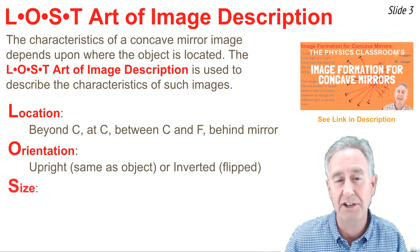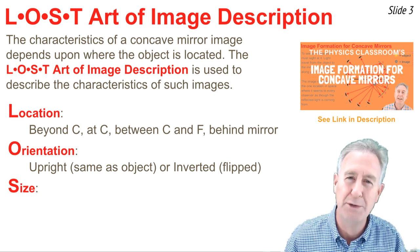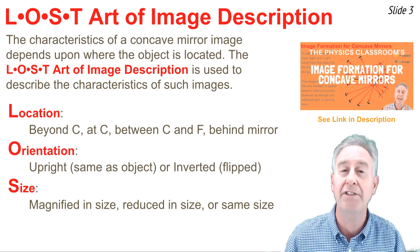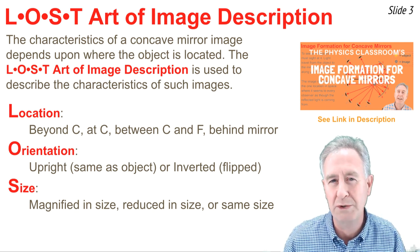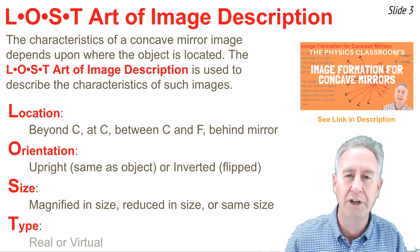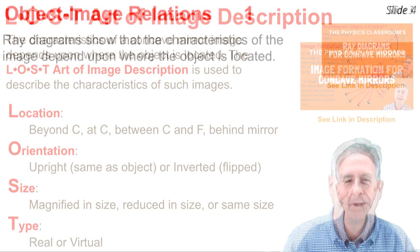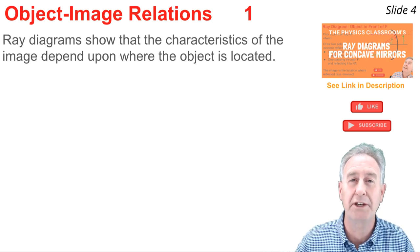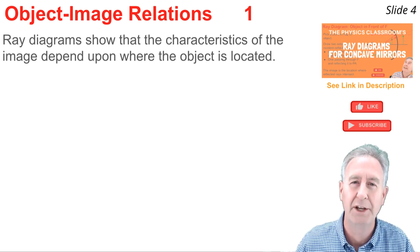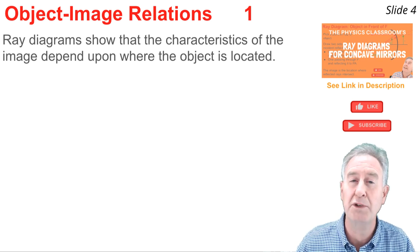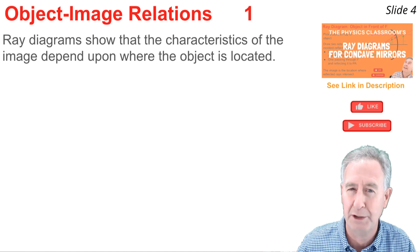The S of LOST stands for size — the relative size of the image compared to the object. We use terms like magnified if the image is larger, reduced if it's smaller, or same size. The T of LOST stands for image type, which can be real or virtual. The characteristics of images depend upon where you place the object, and we'll use the LOST framework to describe images for several object locations.